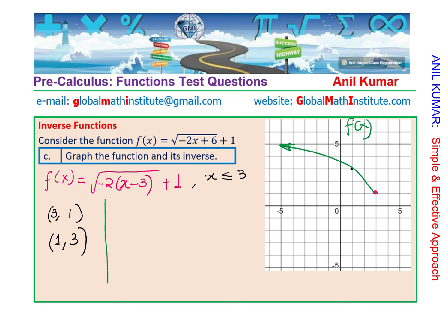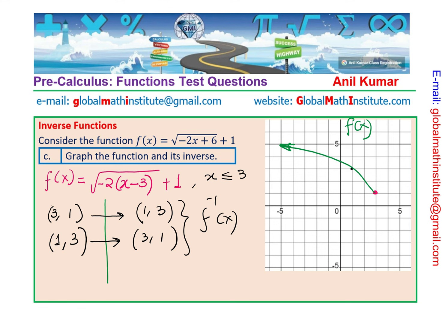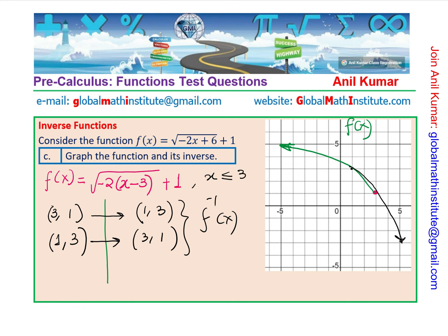For the inverse function f⁻¹(x), we swap the points: (1, 3) becomes (3, 1) and (3, 1) becomes (1, 3) — both points are shared. Since the inverse is a parabola opening downward, the graph of f⁻¹(x) curves accordingly through those two points. These two points are common to both graphs. Let me redraw it more clearly — that is the inverse of this particular equation.